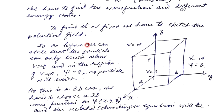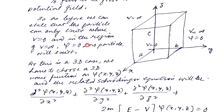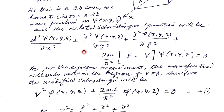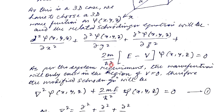So this is a three-dimensional potential box. First, to find the state of the particle, we must assume the wave function. The wave function must be a three-dimensional wave function, psi(x, y, z). The three-dimensional Schrödinger equation has the structure: del squared psi(x, y, z) plus (2m/h-cross squared)(E minus V) psi(x, y, z) equals 0.